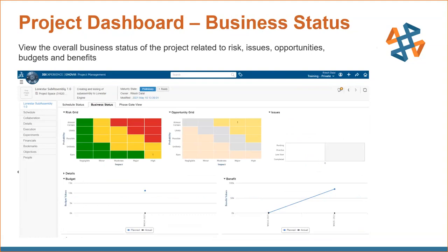There's also a Business Status tab that gives you a business perspective on the project — a risk grid showing where risk lies, opportunities, issues, budgets, and benefits. Budgets can be broken down by resource, equipment, software, or other categories, and you can track against them from this high-level view. You don't have to dive into the project to see all of this — it's all available in this analytical view.